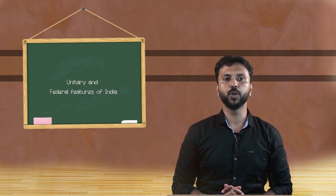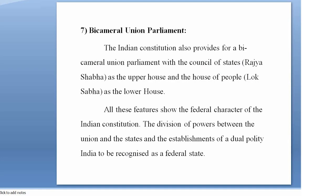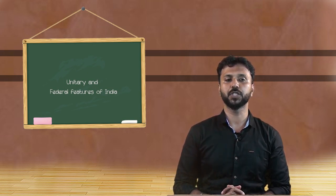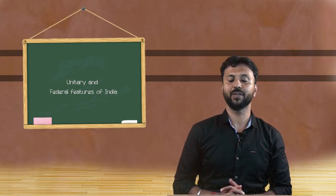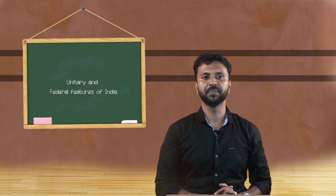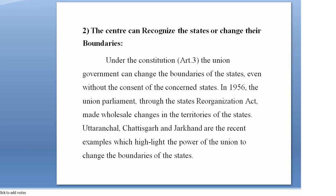The Indian constitution also provides for a bicameral union parliament. All these features — the division of powers between the union and the states and the establishment of dual polity — show the federal character of the Indian constitution and lead India to be recognized as a federal state. However, the unitary character of the Indian union is demonstrated by provisions which establish a very strong central government, ignoring the true spirit of division of powers by making the union substantially more powerful than the states.